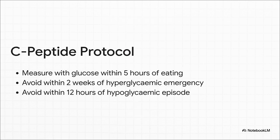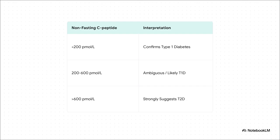For this test to be worth anything, you have to get the conditions right. You need to measure it with a glucose level, preferably when the patient hasn't been fasting. And critically, you've got to avoid testing right after a major hyperglycemic or hypoglycemic event because that can temporarily shut down beta cell function and give you a falsely low number. These thresholds give you clear direction: a C-peptide below 200 pmol/L confirms severe insulin deficiency — you're looking at type 1. If it's over 600, that points very strongly to type 2 and its characteristic insulin resistance. That gray area in between — 200 to 600 — is where you need to put it all together with the clinical picture and probably follow up.